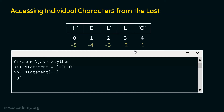If we are interested in accessing another character, say the one with negative index minus 4, we should type minus 4 within the square brackets instead of minus 1. Then we hit enter to get the output. In this case, we get capital E as the output. We are done with the topic of accessing individual characters from the last.